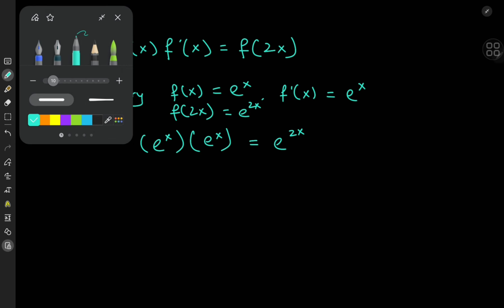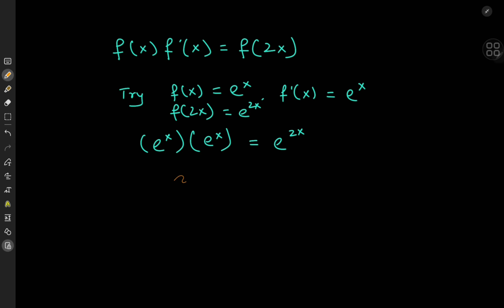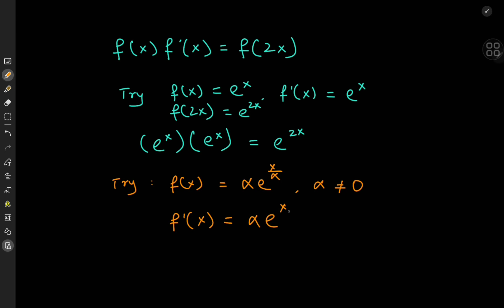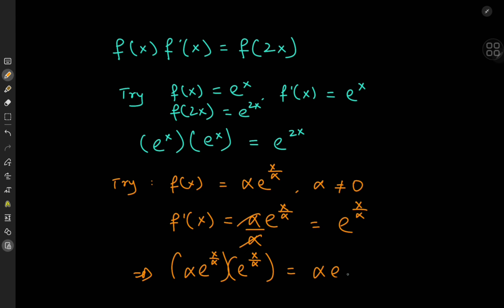Let's generalize the solution a little bit. We try defining the function f(x) as alpha times e to the x divided by alpha, where alpha is some non-zero real number. In this case, the derivative f prime equals alpha times e to the x by alpha, and because of the chain rule we have a factor of 1 over alpha as well, giving some cancellation, and we get e to the x by alpha. Multiplying the function by its derivative gives alpha times e to the 2x by alpha, which is again f of 2x as per our definition.